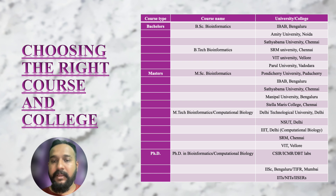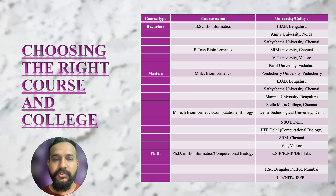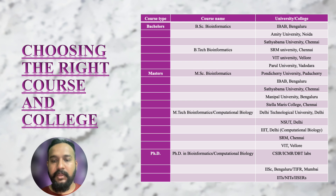For BTech Bioinformatics, you have VIT and SRM Chennai. For BSc and MSc Bioinformatics, IBA Bengaluru is also a very good college. For MTech, there is Delhi Technological University, and if you want to pursue a Master's in Computational Biology, you should go for IIIT Delhi. You can choose your college according to your location and whatever suits you better.